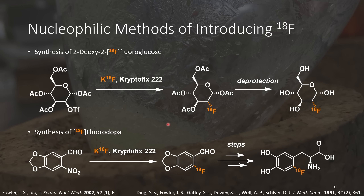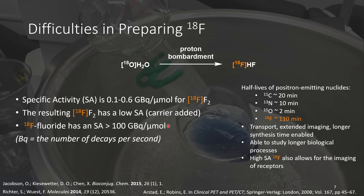Fluorine-18 is used in these cases as it's a positron-emitting nuclei with a half-life of 109.5 minutes. Fluorine-18 is typically prepared in two different ways: through the proton bombardment of oxygen-18-containing water, as well as through the proton bombardment of oxygen-18 gas.